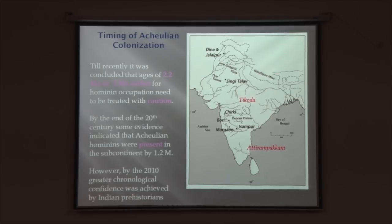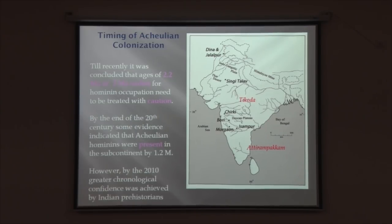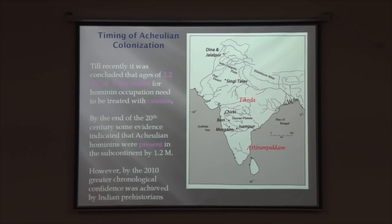As a result, two sites in southern India became significant: Isampur in northern Karnataka and Athirampakam on the southeast coast. Isampur is situated in the Bhima Basin, a Proterozoic Precambrian Basin. Athirampakam is associated with upper Gondwana formations in that region. South of the Cauvery River, we do not have any evidence of earlier settlements comparable to these two sites.